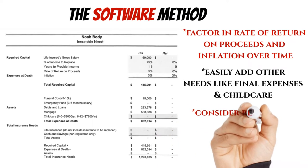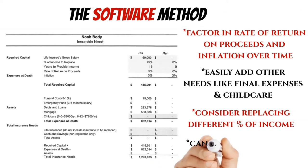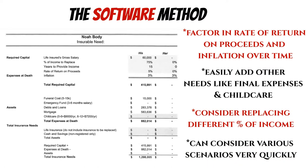You're also able to play around with replacing certain percentages of each person's income. For example, if something happens to the breadwinner, how much of that do you want to replace? If you have a family of four and one parent is gone, monthly expenses will go down because there's just not as many people in the household. One of the greatest things about the software method is you can look at various scenarios very quickly by just punching numbers in and getting an answer right away, providing a much more accurate analysis of the need — and you can do this right in front of the client, playing with different scenarios and helping them find what they're comfortable with.